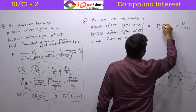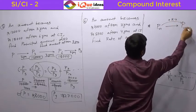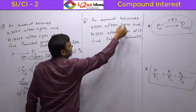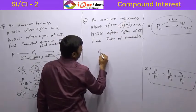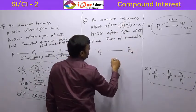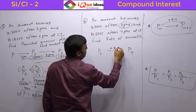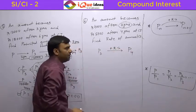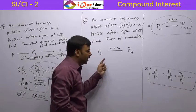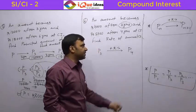From year to year, the change has to follow the rate. In this case, the amount after 3 years is P3 and the amount after 4 years — these are consecutive years — so whatever percentage change has happened from P3 to P4 has to be the rate of interest.